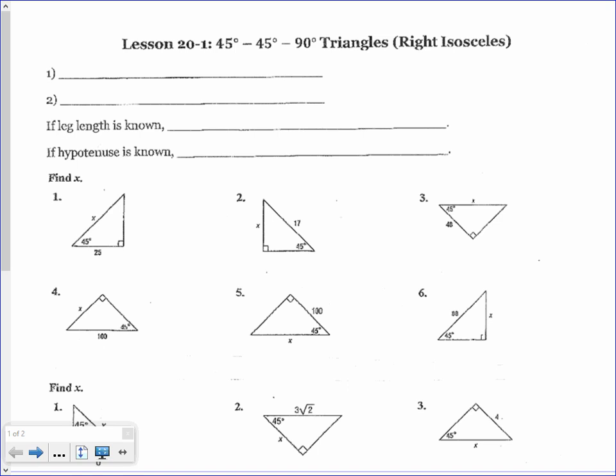Today we're going to be looking at lesson 20-1, 45-45-90 triangles. These are considered right isosceles triangles because they have a 90 degree angle, making it a right triangle, and two 45 degree angles that are congruent. Since we have two congruent angles, we have two congruent side lengths, which makes it an isosceles triangle.